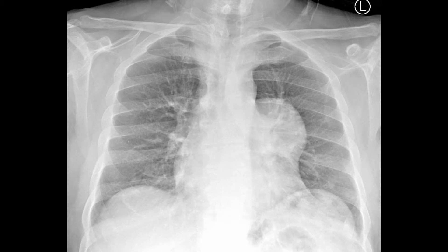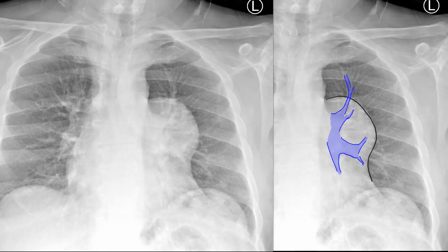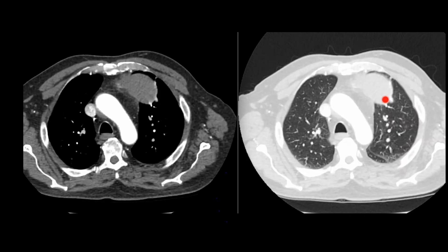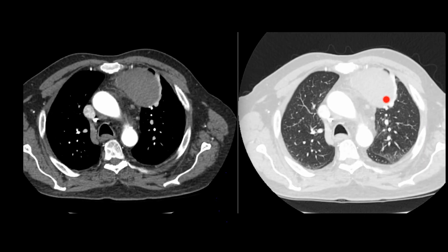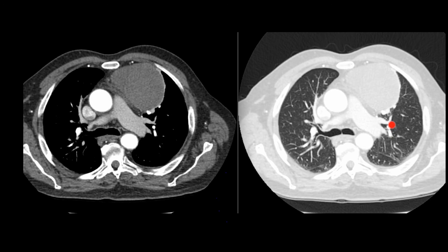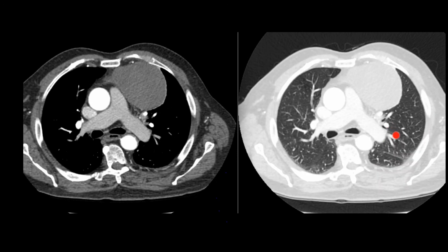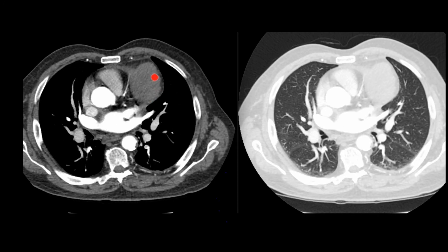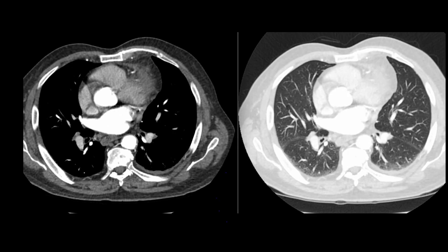Here is another anterior mediastinal mass. Once again, the left heart border is obscured because this mass lesion sits anteriorly, and you can see the hilum vessels through the mass lesion. On the CT, the mass lesion is clearly shown, and the reason why you can see the hilum vessels is because they are abutting aerated lung. This was thought to be an anterior mediastinal cyst arising from the pericardium.